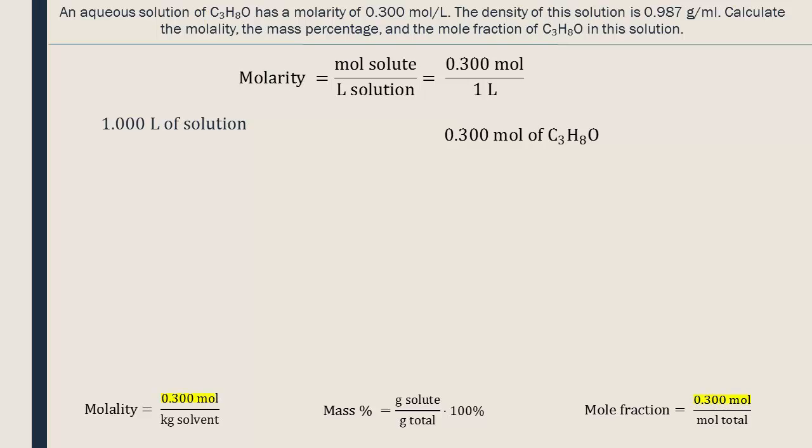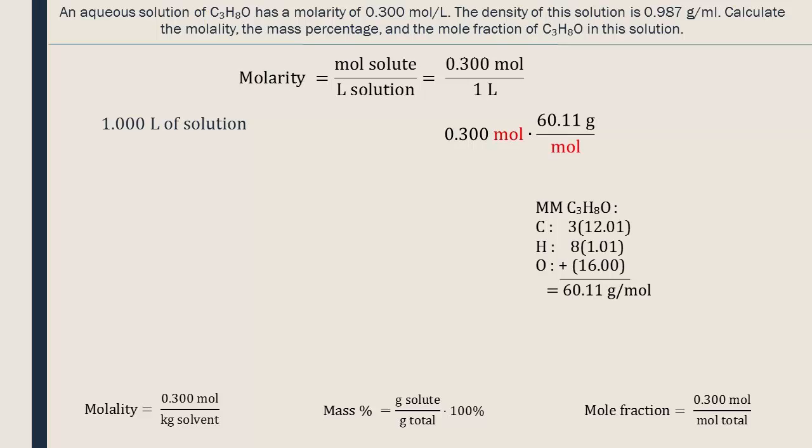Now that we know the number of moles of C3H8O, we can multiply this value by the compound's molar mass to determine its mass. To calculate the molar mass of C3H8O, we have to add the mass of all the atoms in the molecule. We can put the mass of the solute into the mass percentage equation.